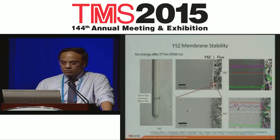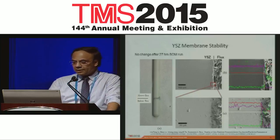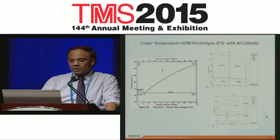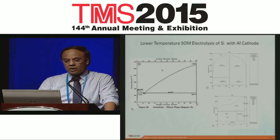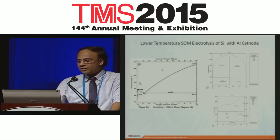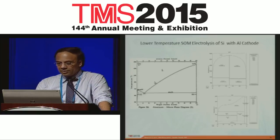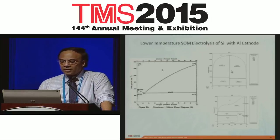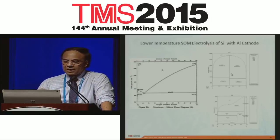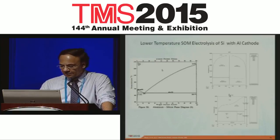One could also use liquid aluminum as a cathode, enabling a lower reduction temperature of around 900°C. The silicon goes into solution in the liquid aluminum, and the different products that can form in the aluminum can be analyzed. The purification can be done similarly to what was described for the silicon-tin system.